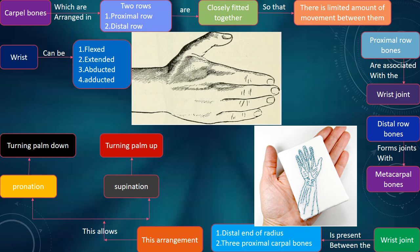The carpal bones, which are arranged in two rows, proximal row and distal row, are closely fitted together so that there is a limited amount of movement between them.